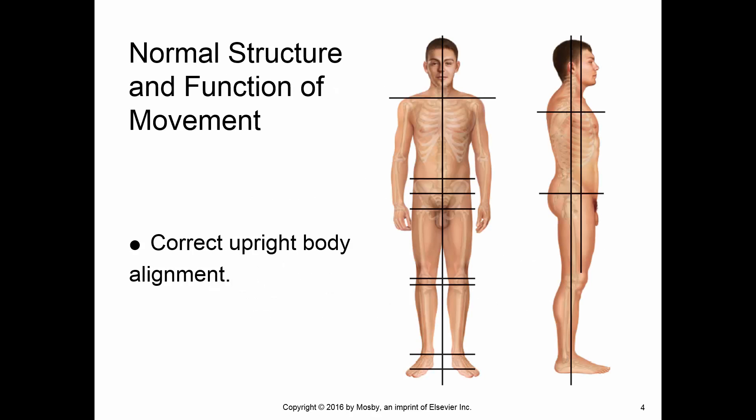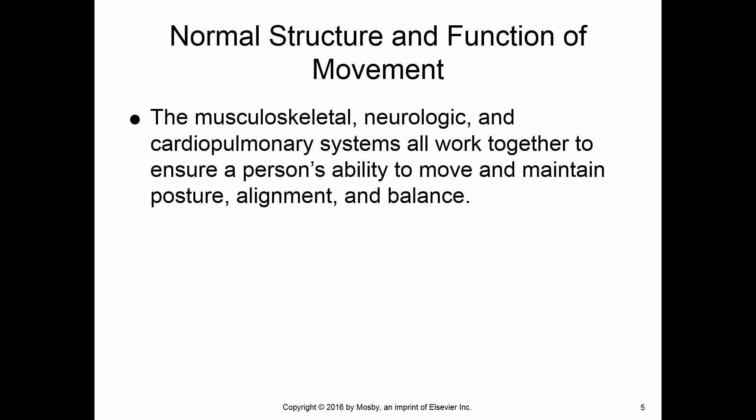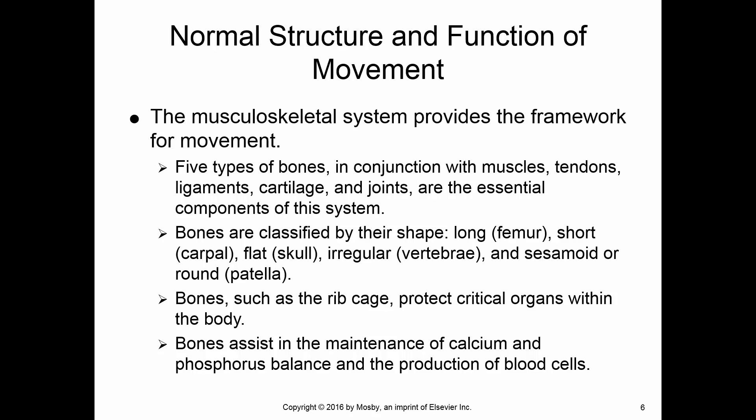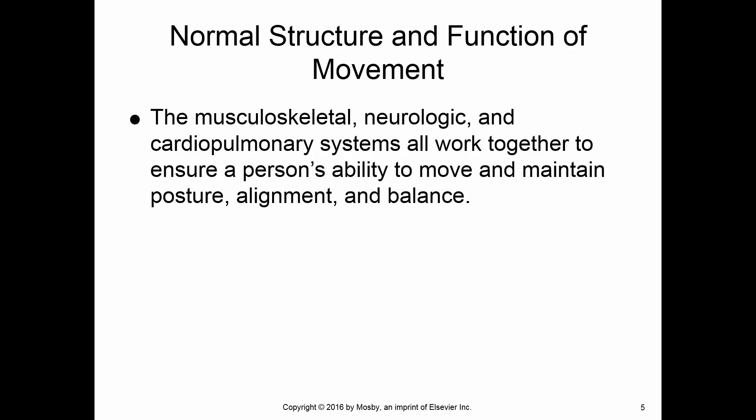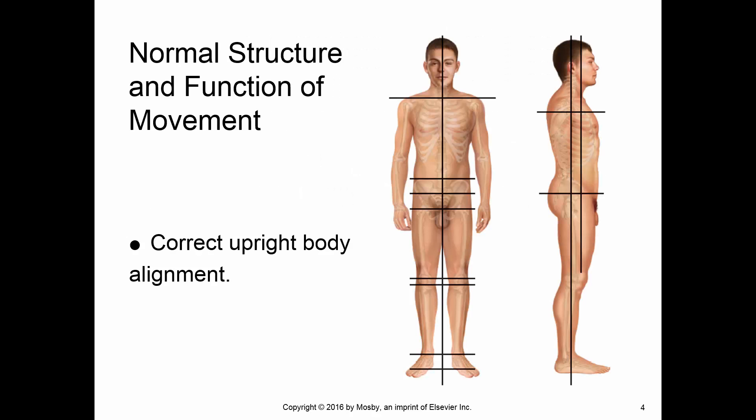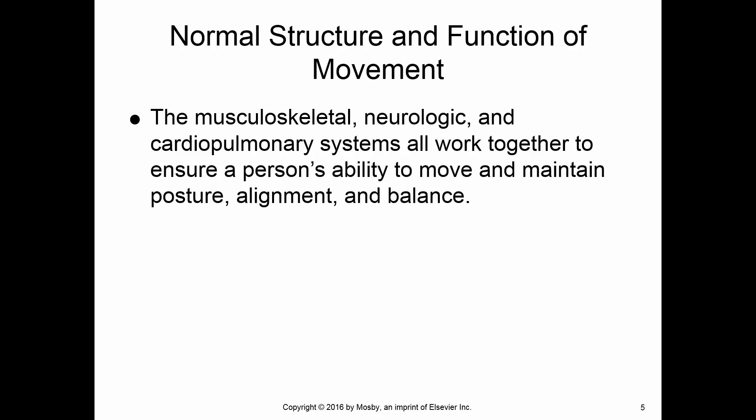I'm not going to go over normal structure, but please do review those things. When we talk about mobility and immobility, it's not just the musculoskeletal system we're referring to — we're also referring to neurological and cardiopulmonary capabilities, all of which affect a patient's mobility.